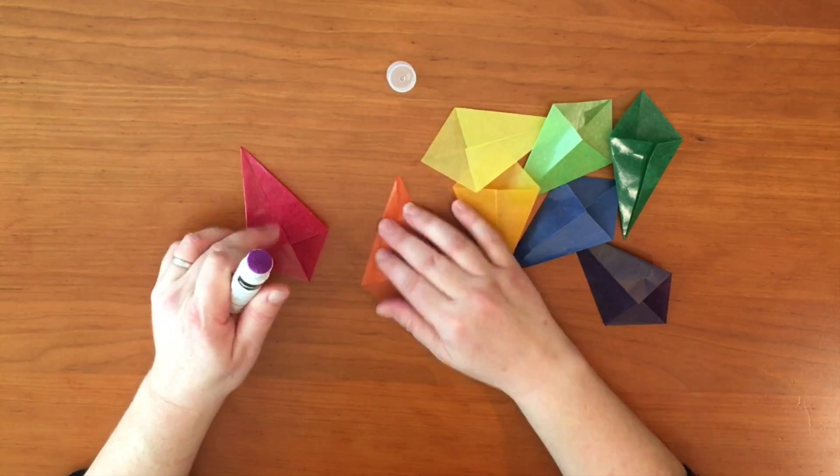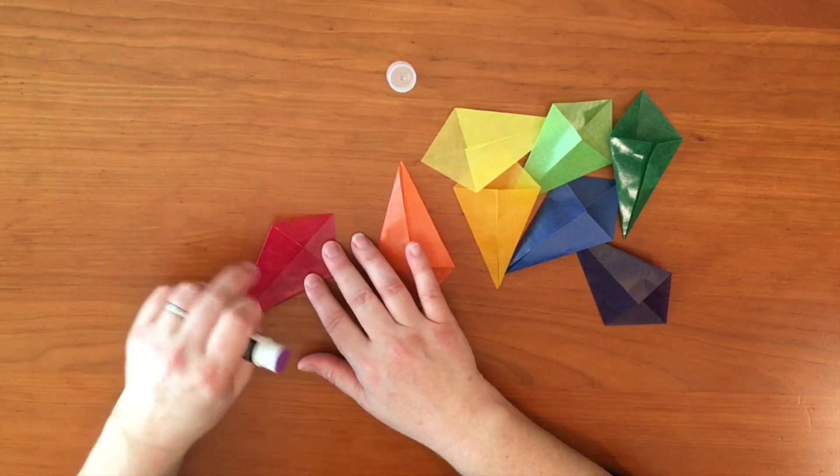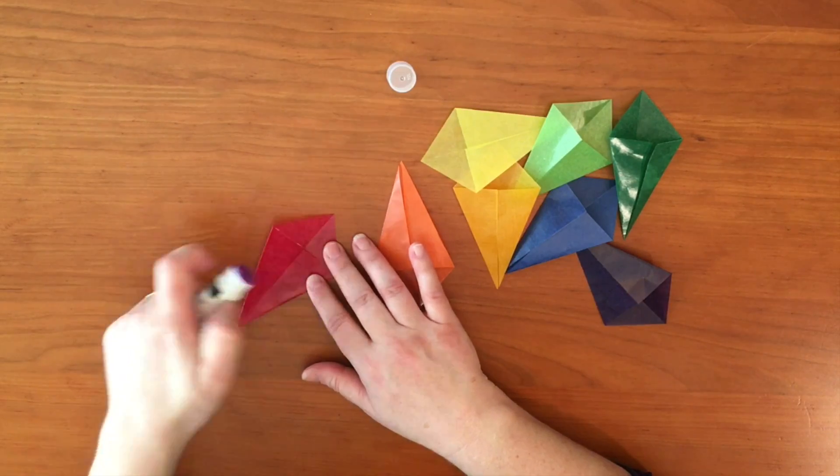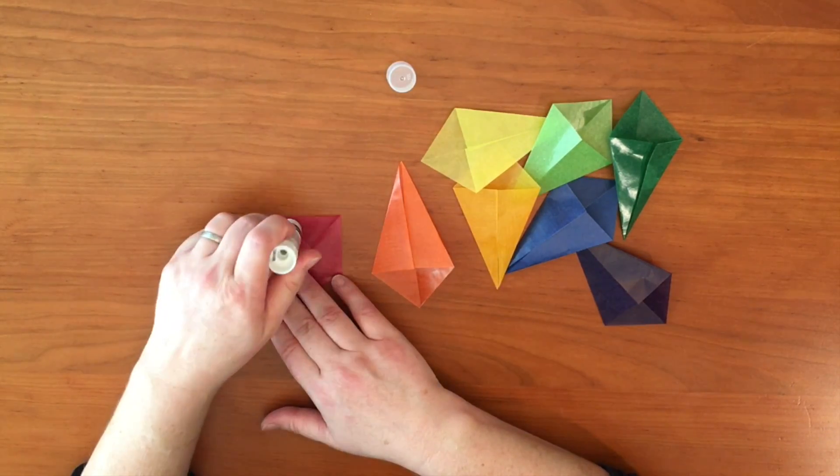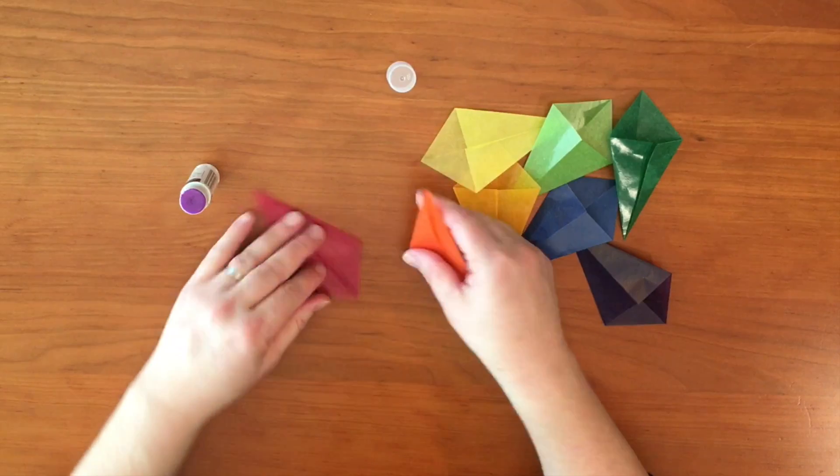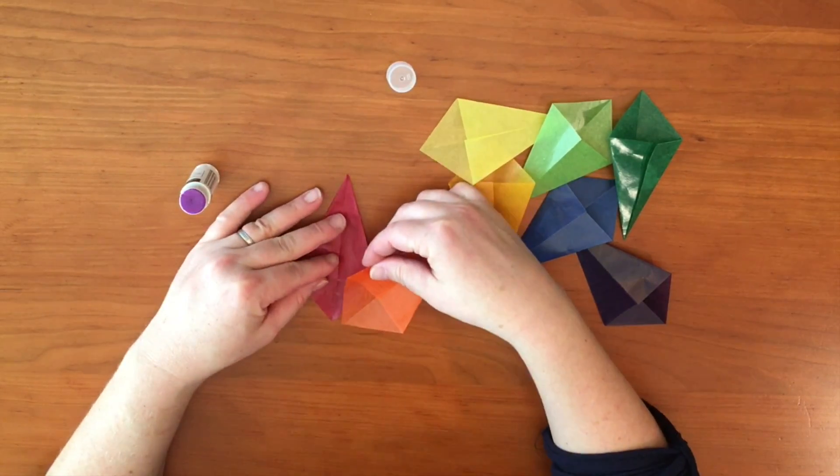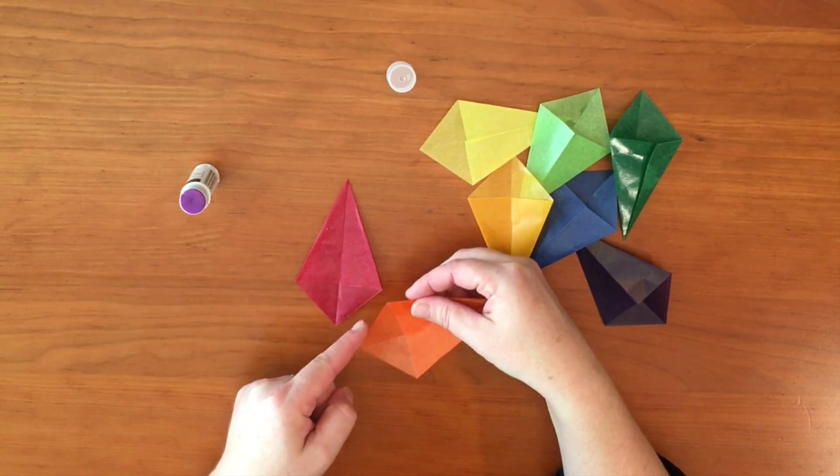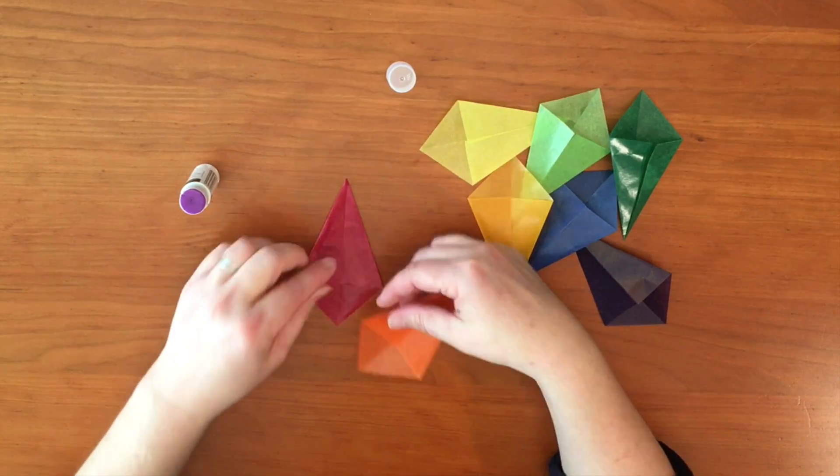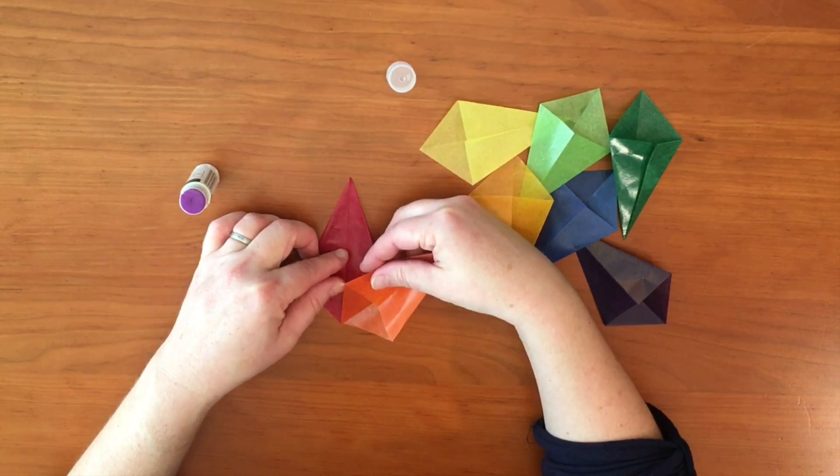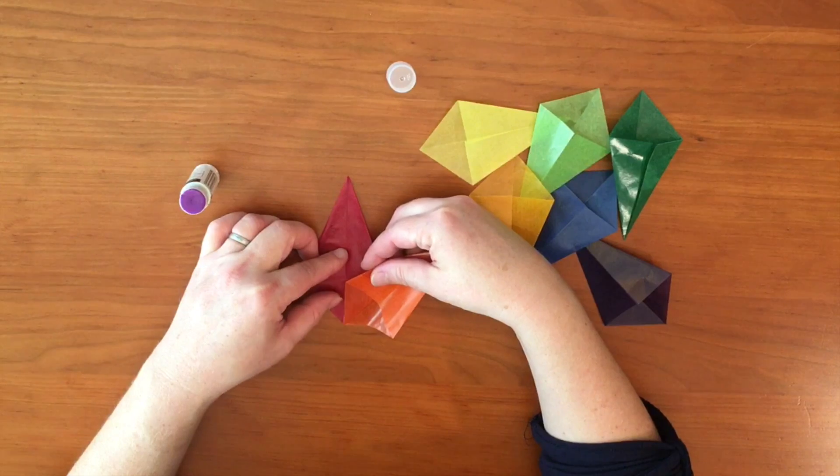So I'm going to start with my red star and I'm going to glue just this triangular portion right here. So I put my glue on and then I line up this edge of the orange star with the center line of the red star. And the points should be touching.